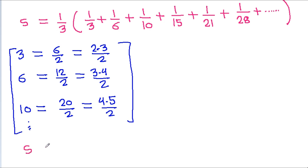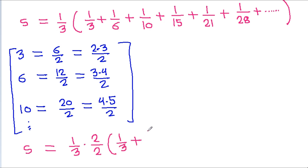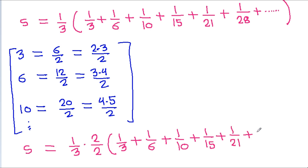So S will be equal to 1 by 3, and if we multiply by 2 and divide by 2, it becomes 1 by 3 times the sum of 1 by 3 plus 1 by 6 plus 1 by 10 plus 1 by 15 plus 1 by 21 plus 1 by 28 plus and so on.